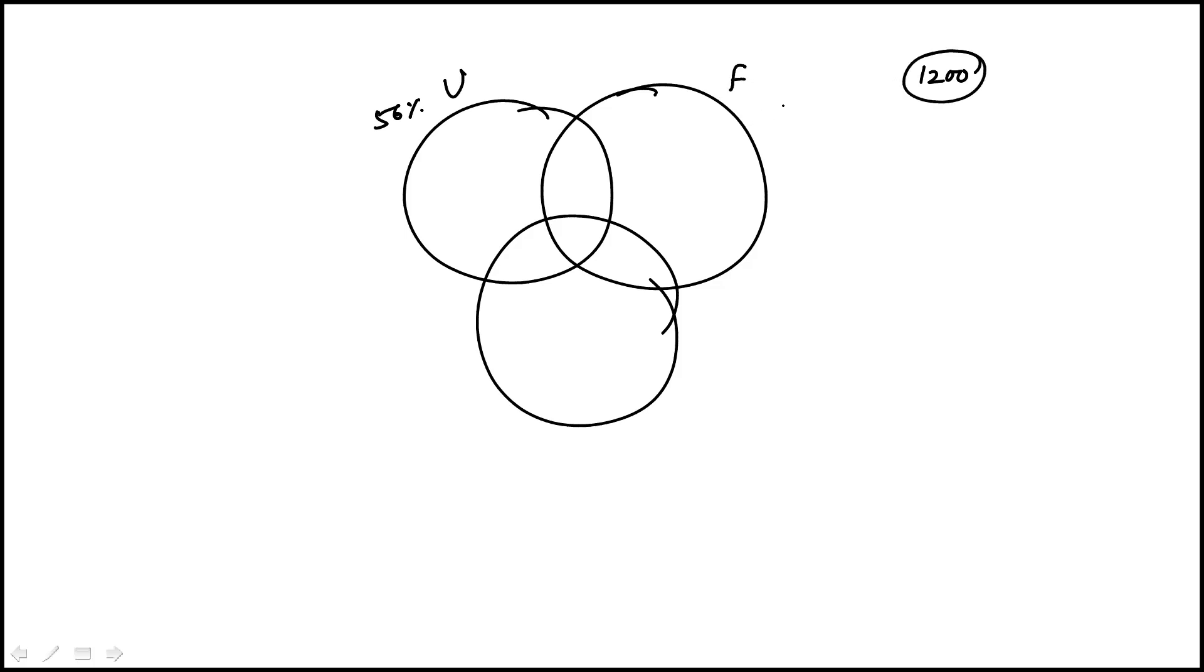Then we have the fast response time, which is 48%, and then bargain prices, that's 42%. So that's the most general case, and they don't tell us that everyone gave some response. So we'll deal with that as I put more structure.